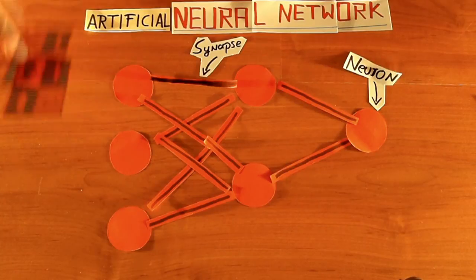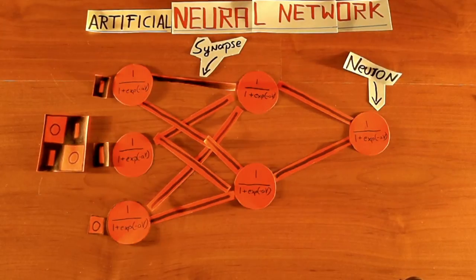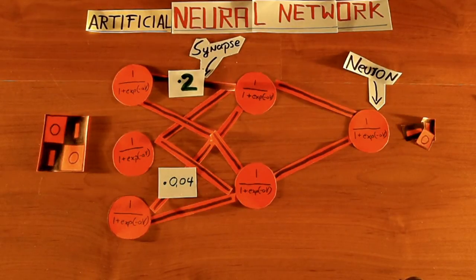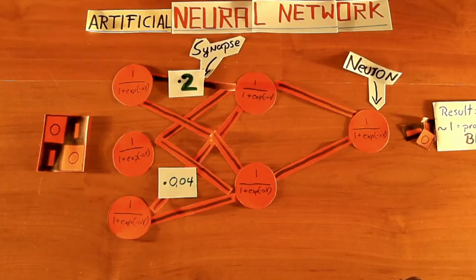And these neurons are connected with each other through synapses. However, they do not exchange charges, but values. Each neuron will take a value, process it in its inner function and forward the result.